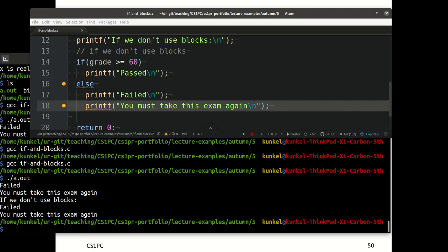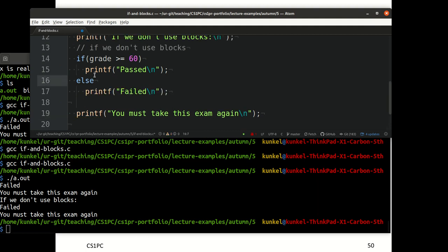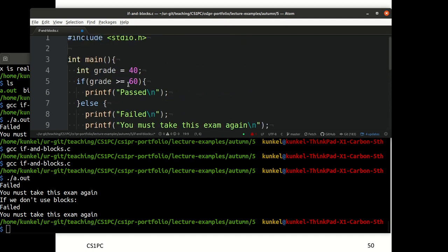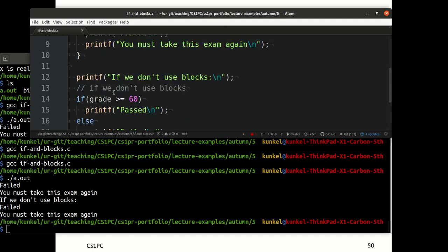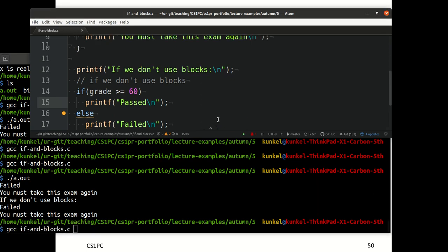Let's compile and run it. In this case, we get both times the same output. Is this now correct code? No, it isn't. Because what in fact happens is the printf indentation suggests it's executed inside the else branch, but it's not. It's in fact executed underneath. So it will always be executed. How can we test that? Let's change it back. I changed the grade to 60. Now we will go into the if part of the branch. So we shouldn't see you must take this exam again. That's what happens here.